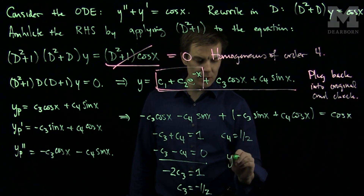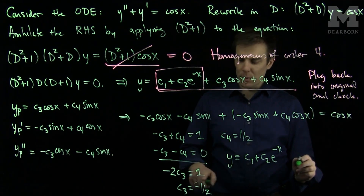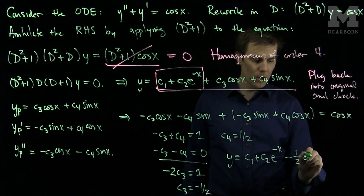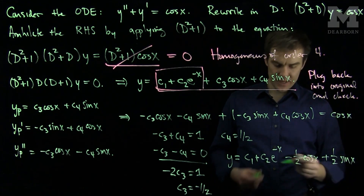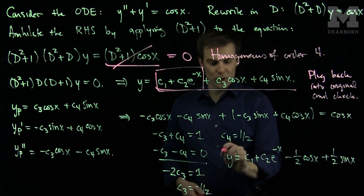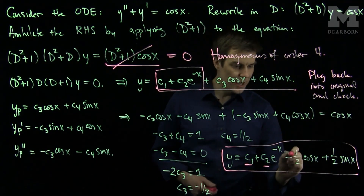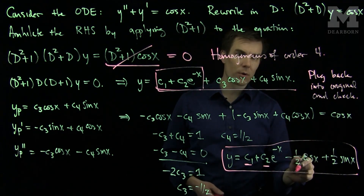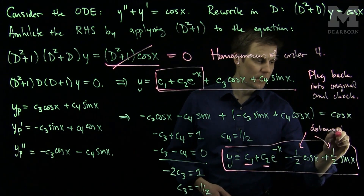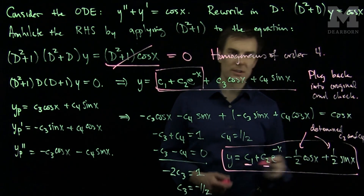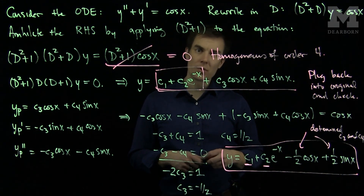That tells us the complete solution is y = c₁ + c₂e^(−x) − (1/2)cos(x) + (1/2)sin(x). We have now solved the original problem: c₁ and c₂ are the two free constants of the second order equation, and the particular solution coefficients c₃ = −1/2 and c₄ = 1/2 have been determined. By annihilating the right hand side, plugging back in, and checking, we can solve any constant coefficient non-homogeneous ODE using this method.